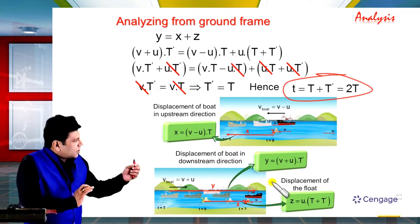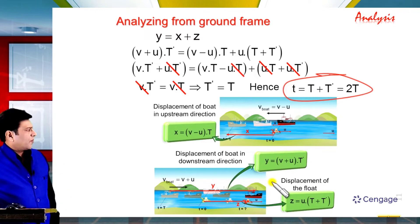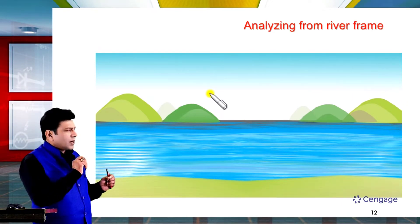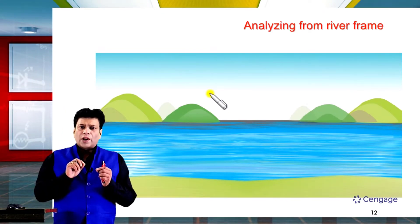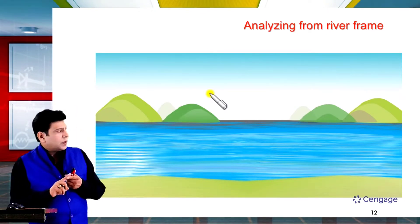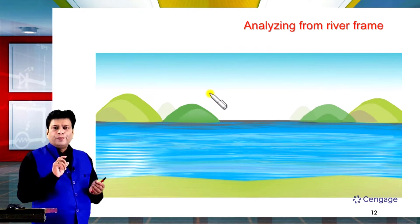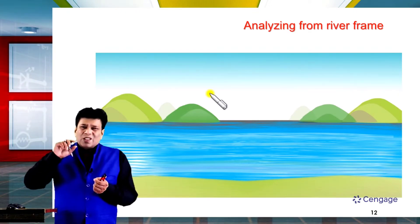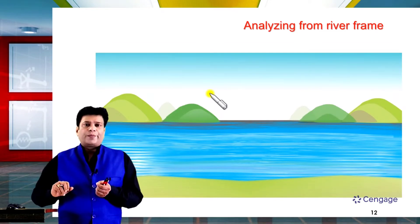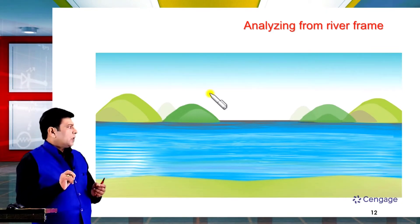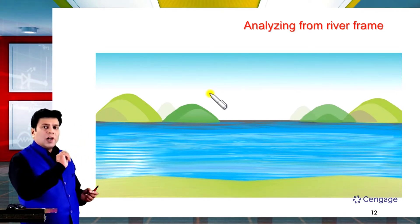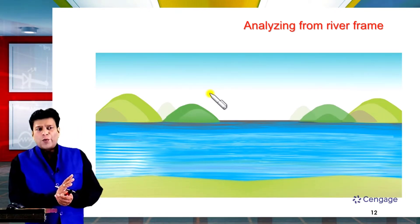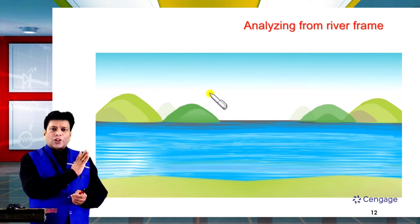Now let us analyze this situation from the river frame of reference, or water frame of reference. An important observation: the velocity of the water is u with respect to ground, and the velocity of the float is also u with respect to ground. Therefore the velocity of the float with respect to water is zero — meaning the float is always at rest with respect to water. Also, the velocity of the boat with respect to water is v, whether it is moving upstream or downstream.